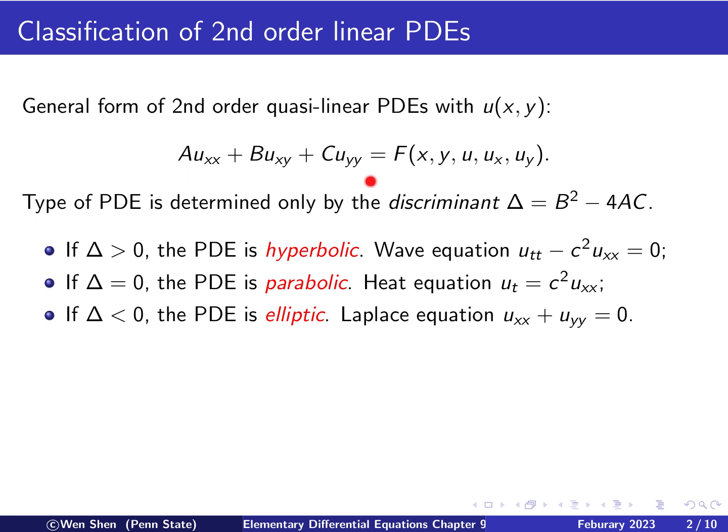The way we write it like that, the reason why we emphasize these higher-order derivative terms is that the type of the PDE is solely determined by these three terms. And actually, it's only determined by one value, that is what we call the discriminant delta, which is b squared minus 4ac. So there are three cases, depending on the sign of it. If delta is bigger than zero, then this PDE is hyperbolic. We have seen an example, that is the wave equation, utt minus c squared uxx equals zero. So here you see A is 1, B is 0, and C is negative c squared, and the delta will be bigger than zero.